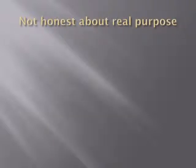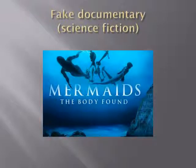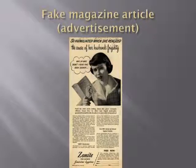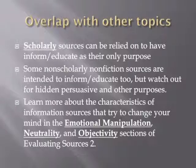Then there are the sneaky information sources that pretend to be informative but are actually something else — like an ad for a fake book that's actually just a bigger ad for the product. There's a lot of overlap between this topic of intended purpose and the topic of scholarly versus popular sources. Scholarly sources are always supposed to be meant to inform or educate in an unbiased way. The peer review process helps to screen out bias. The sections on agenda, neutrality, and objectivity in evaluating sources will give you more information.